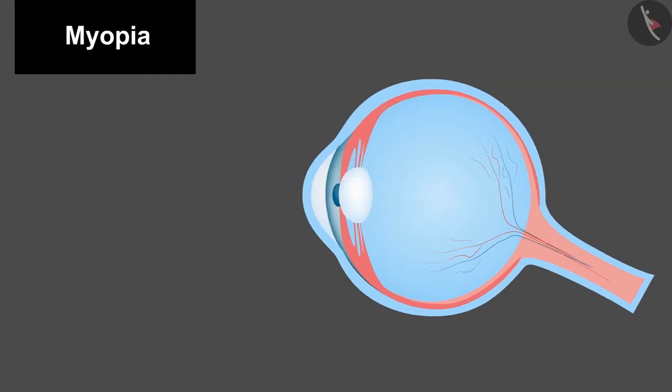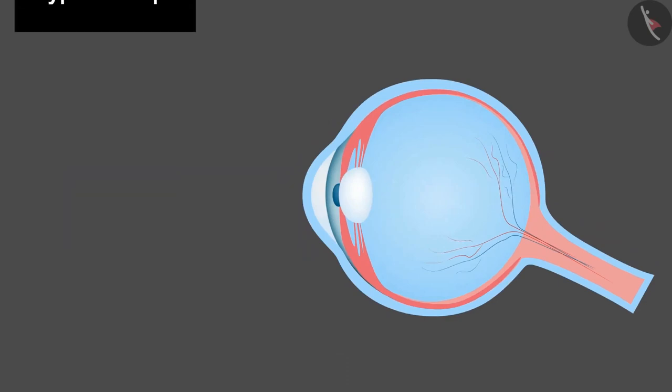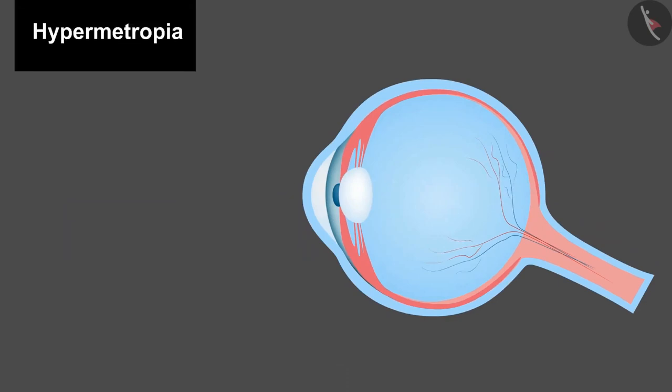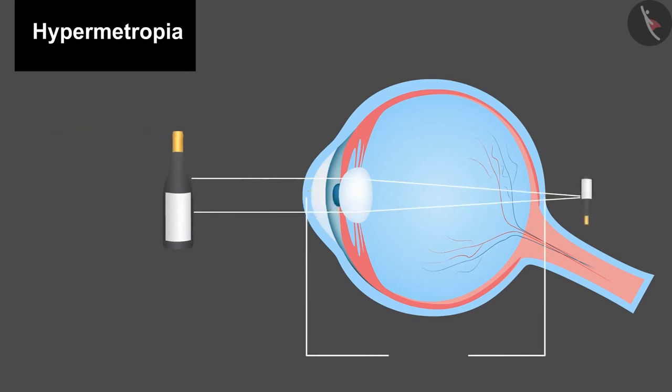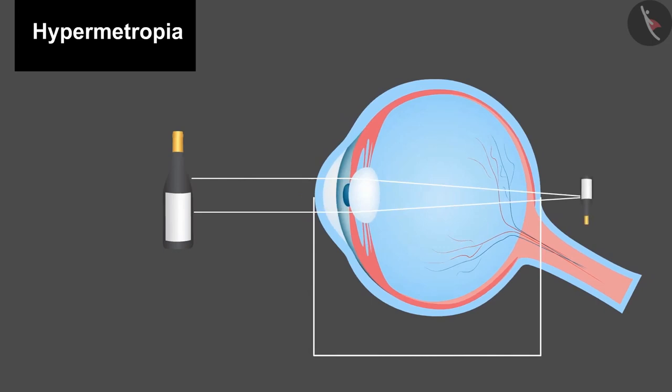Second defect, which is also known as far-sightedness or hypermetropia. A person with hypermetropia can see distant objects clearly but finds it difficult to see the nearby objects distinctly. In this case, the image is formed behind the retina as the focal length of the lens increases or the eyeball shrinks. The image is formed behind the retina.